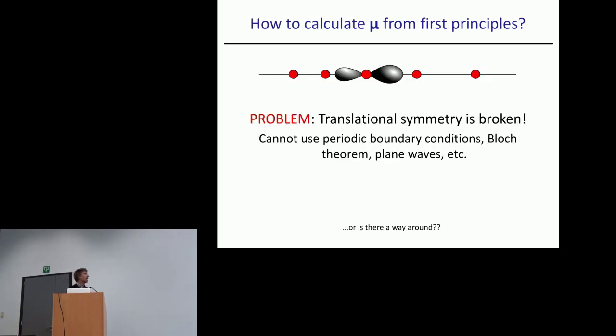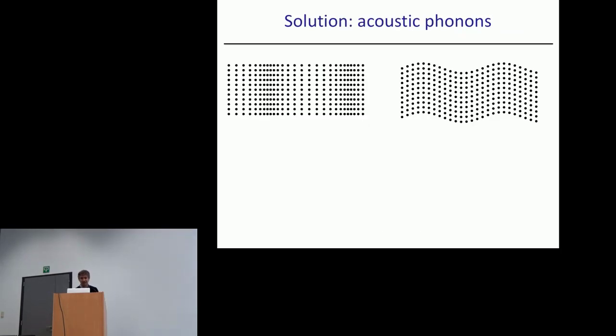We want to calculate this from first principles, but here we run into the main conceptual problem that lies behind dispersion effects: translational symmetry is broken. We are applying a non-uniform strain or non-uniform field in general, so in principle we cannot use periodic boundary conditions, Bloch theory, plane waves, etc.